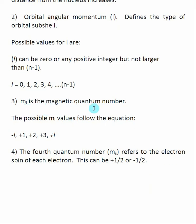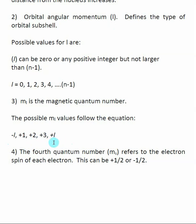M sub L is called the magnetic quantum number. The possible values for M sub L are determined by the L value. You start at minus L and add one, then two, passing through zero, continuing until you reach positive L — those are your possible M sub L values. What you need to understand is that the possible M sub L values are determined by the L value of the electron.